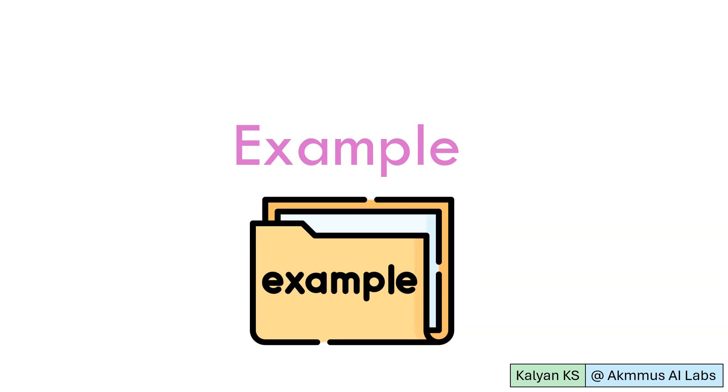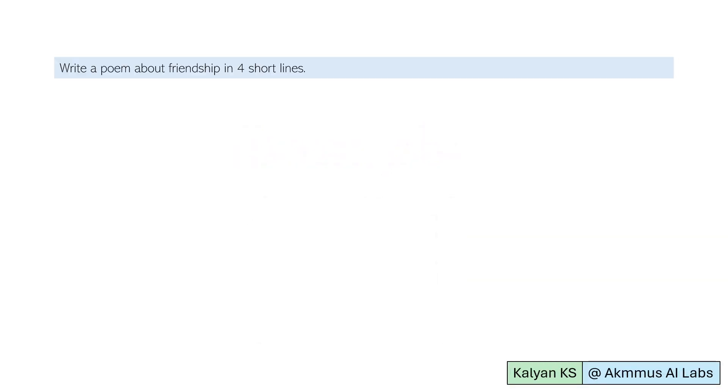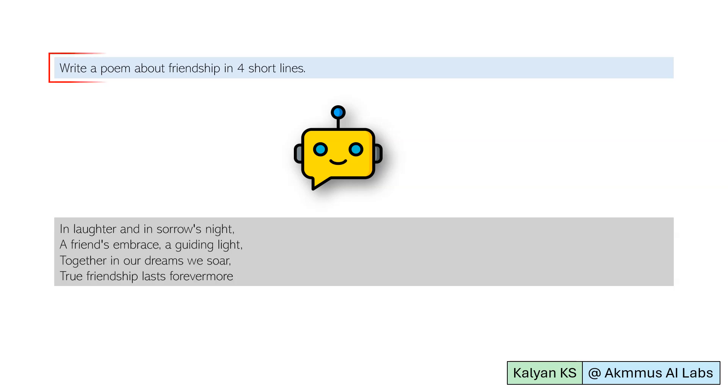Now, let us see an example of zero-shot prompting. Here is an example prompt for zero-shot prompting. Here, the prompt asks the chatbot to write a poem about friendship in four short lines. If you observe the prompt, the prompt doesn't include any examples, and hence it is zero-shot prompting. As it is a simple task, the chatbot, even in the absence of examples in the prompt, uses its knowledge and then generates a four-line crispy poem about friendship.